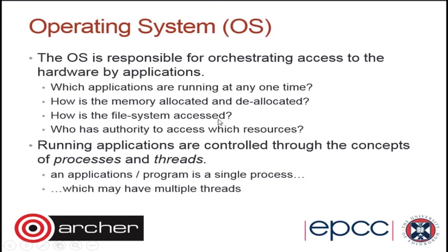Threads are managed by and associated with their parent process. This is one of the ways we can use multi-core systems: a program can generate eight threads and give one to each available core. They all go off and do work separately on different cores while being managed by the main program. This is one of the ways we can use multiple cores.